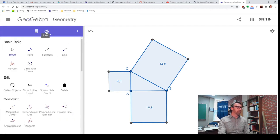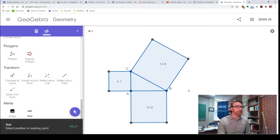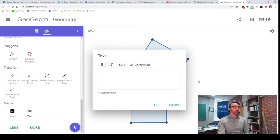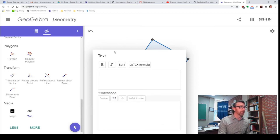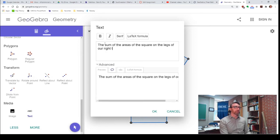So, we've got that. And now, I'm going to go back to the tools menu, and I'm going to go to text, and we get to put this text anywhere we want. So, I just clicked right there, and it popped up this menu. I'm going to go to the advanced menu here, because this is kind of what I need to do. So, here I can start typing in what I want. So, the sum of the areas of the squares on the legs of our right triangle.